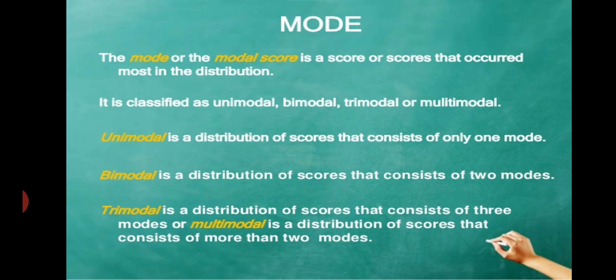Mode, or the modal score, is the score that occurs most in the distribution. That means the repeated value occurring in the data is considered as the mode. It is classified as unimodal, bimodal, trimodal, or multimodal. Unimodal means that value is repeated one or more times, or the data has a single mode.